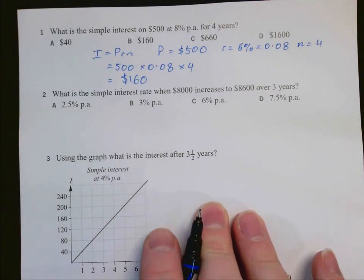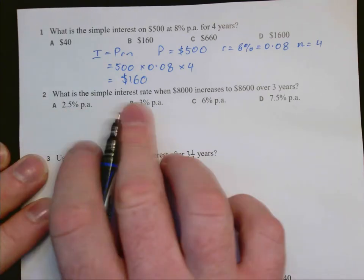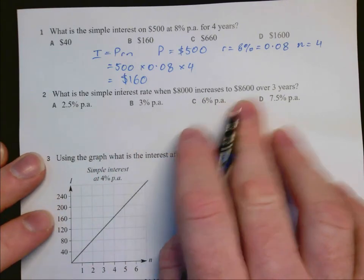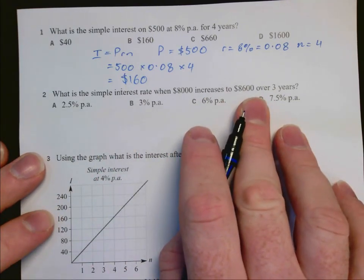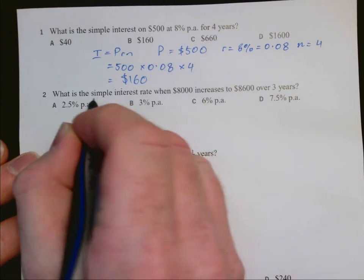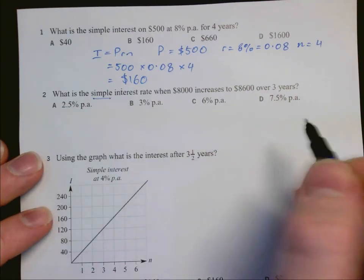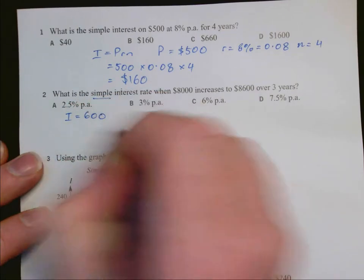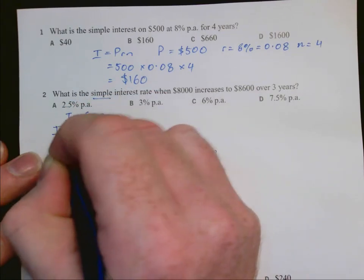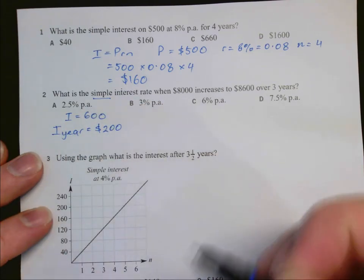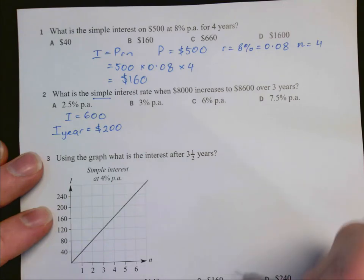In this next question, we need to find the simple interest rate when $8,000 increases to $8,600 over three years. Two ways you could do that. The first way is to consider what interest I've earned. This is simple interest, so I've earned interest of $600 in three years. So for one year, I've earned $200 worth of interest because in simple interest, we earn the same amount of interest each year.